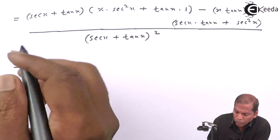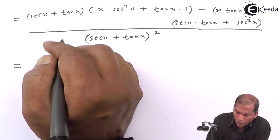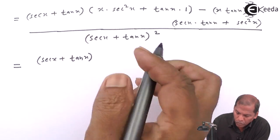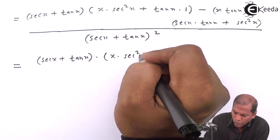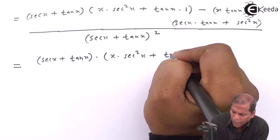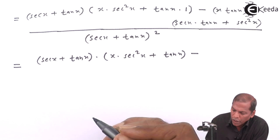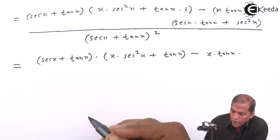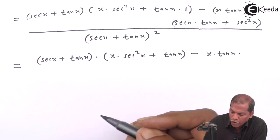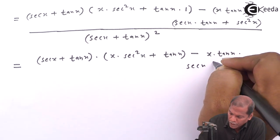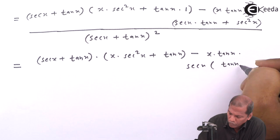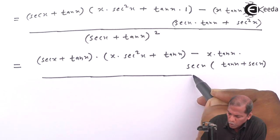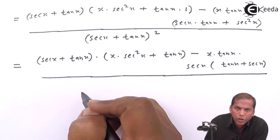So that equals: the first bracket, sec(x) plus tan(x) as it is, into x times sec²(x) plus tan(x), the whole thing written as it is, minus x times tan(x). Then from the last bracket we can take sec(x) as common, giving us sec(x) in bracket: tan(x) plus sec(x). The whole thing is divided by sec(x) plus tan(x), whole bracket squared.